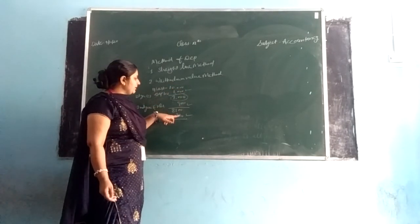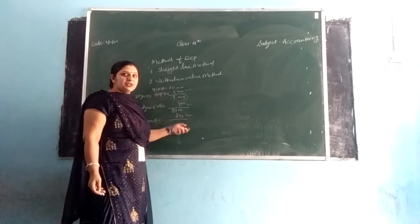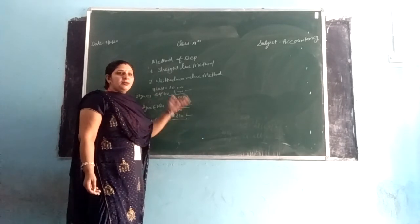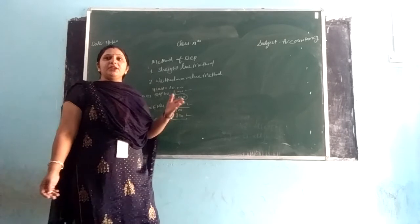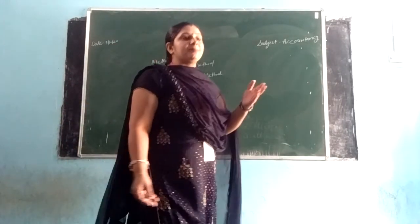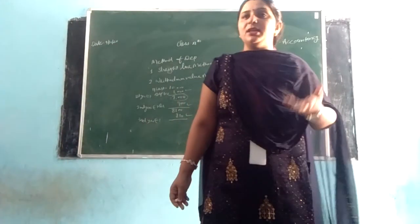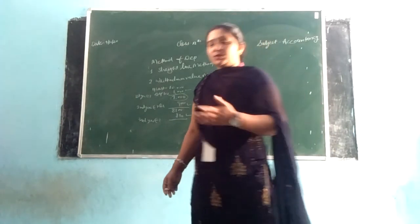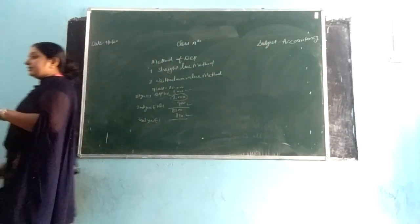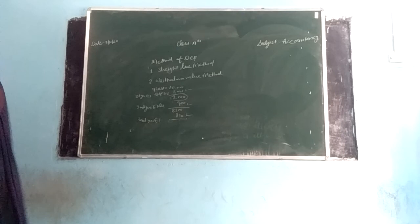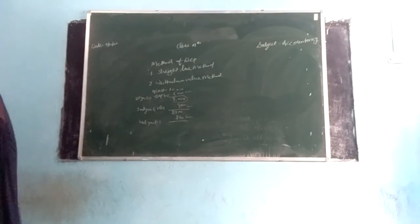With reducing balance method, amounts vary - it will be 729, then 600, and so on. We will have difficulty calculating total depreciation accumulated. So these are the demerits of the written down value method, the reducing balance method.